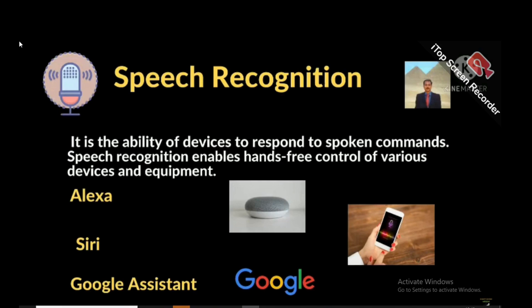For example, Alexa. We can give a voice command and it will switch on your TV, lights, AC, or switch them off. Siri — if you ask what the temperature is, it will answer. Google Assistant — we can give voice commands for searches and it will execute. If you say tell me about Kolkata, it will give information about Kolkata, or Delhi, or whatever you want.